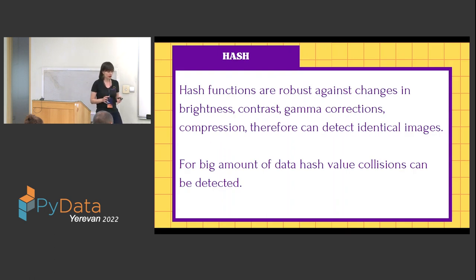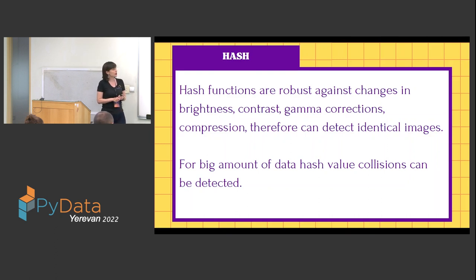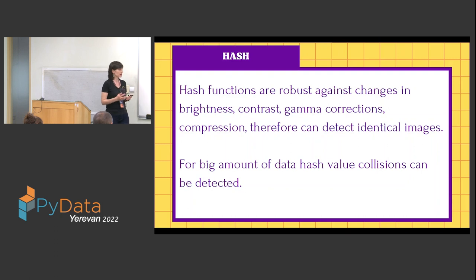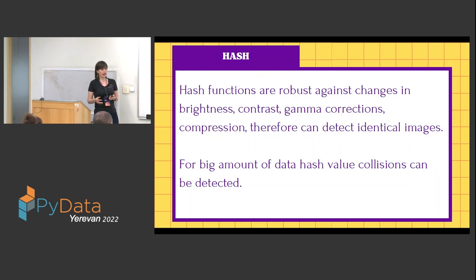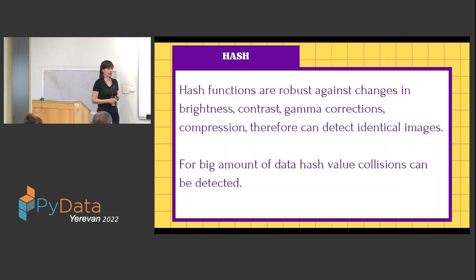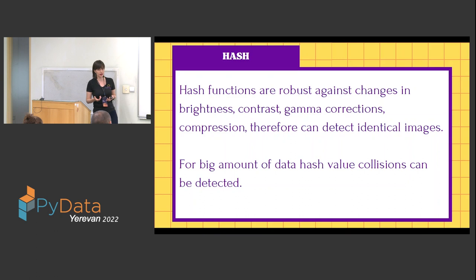I will now focus on classification and detection tasks. Hash functions are robust against changes in brightness, contrast, gamma corrections, and compressions. They are good for selecting identical images. One problem with hash functions in big data scenarios is hash collisions. We have used hash functions, for example, to extract and remove identical frames within each video from our dataset, and it is quite useful.